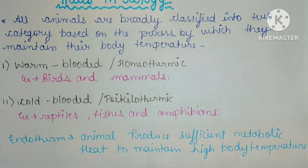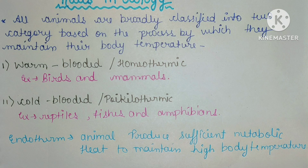We also have endotherms. Endotherms are animals that produce sufficient metabolic heat to maintain a high body temperature. Now we will study the main ecological rules.